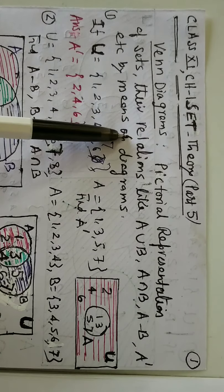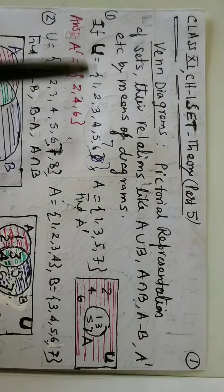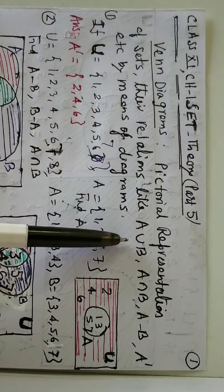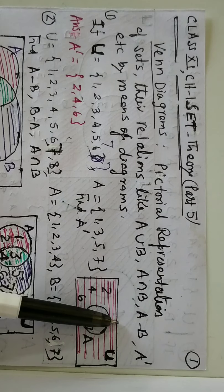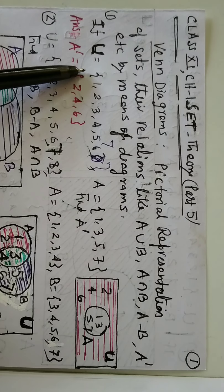Venn diagram is the pictorial representation of sets and their relations like A union B, A intersection C, A minus B, and so on.